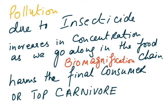Insecticides are sprayed onto crops to kill insects such as caterpillars that eat leaves. If leaves are eaten, surface area decreases, so less photosynthesis occurs — meaning less fruit, seeds, and flowers, and therefore less crop yield. These insecticides are washed into lakes and rivers, where they form a very dilute solution. As smaller fish consume them, and larger fish consume those fish, the chemicals accumulate in their bodies because they are not biodegradable. This process is called biomagnification, and it ultimately harms the final consumer — including humans.